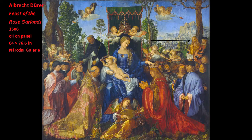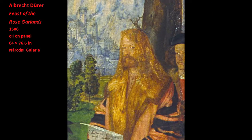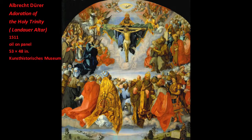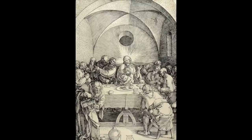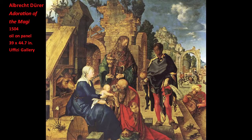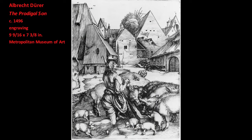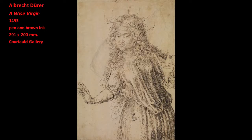In fact, Dürer frequently included self-portraits in many of his works. We see this tendency in some of his most important altarpieces, including his 1506 Feast of the Rose Garlands and his Adoration of the Holy Trinity, painted in 1511. Dürer's propensity for including his own image has led scholars to search for so-called hidden self-portraits, including the bearded king in the Adoration of the Magi, a print of the Prodigal Son, and even one drawing in which Dürer is supposed to have used his own head attached to the body of a woman.